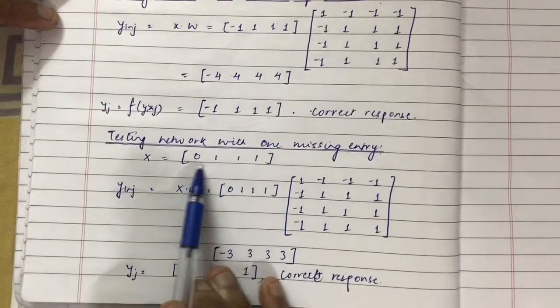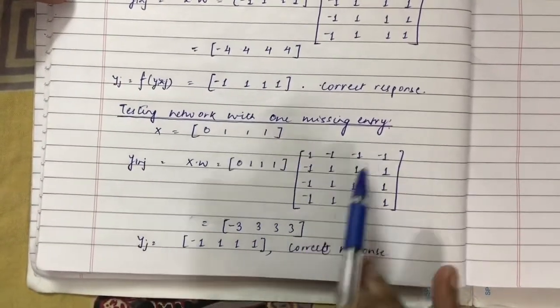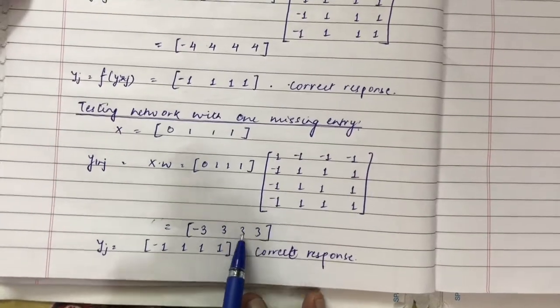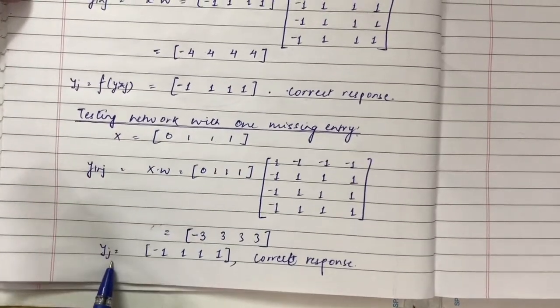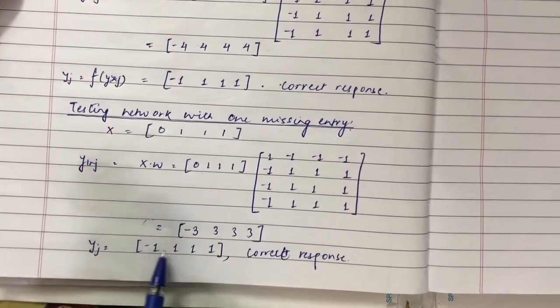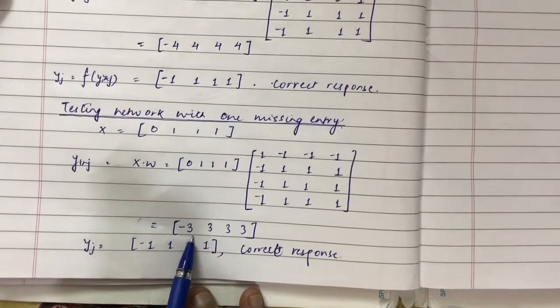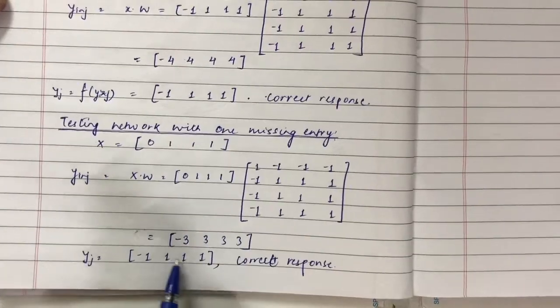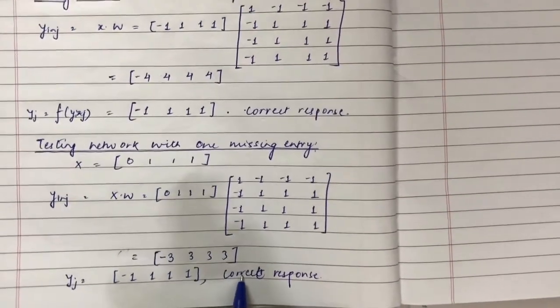For performing the testing, we will multiply this vector with the weight matrix obtained. We will get values like [-3, 3, 3, 3], and after applying the activation function, we will get minus 1 since this is less than 0, and 1 for the others since they are greater than 0. So we get [-1, 1, 1, 1], which is also a correct response.